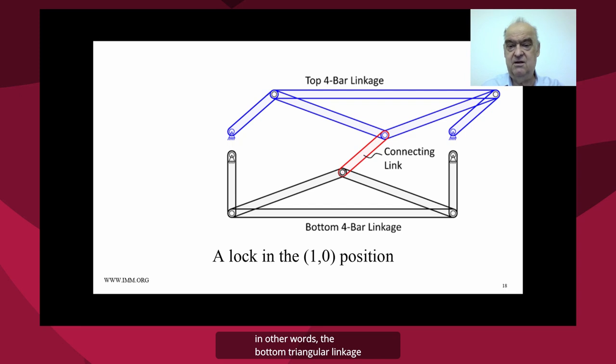And the middle red linkage is no longer at the same angle as the two side links. And therefore, it locks up the bottom link or the bottom triangular structure.